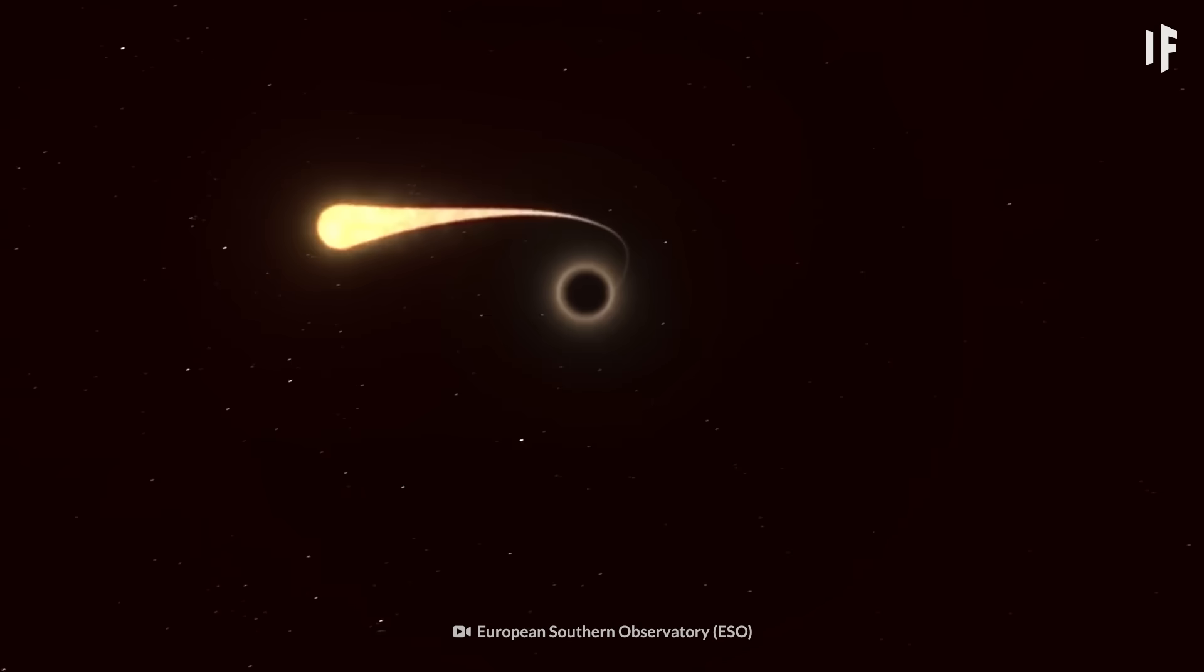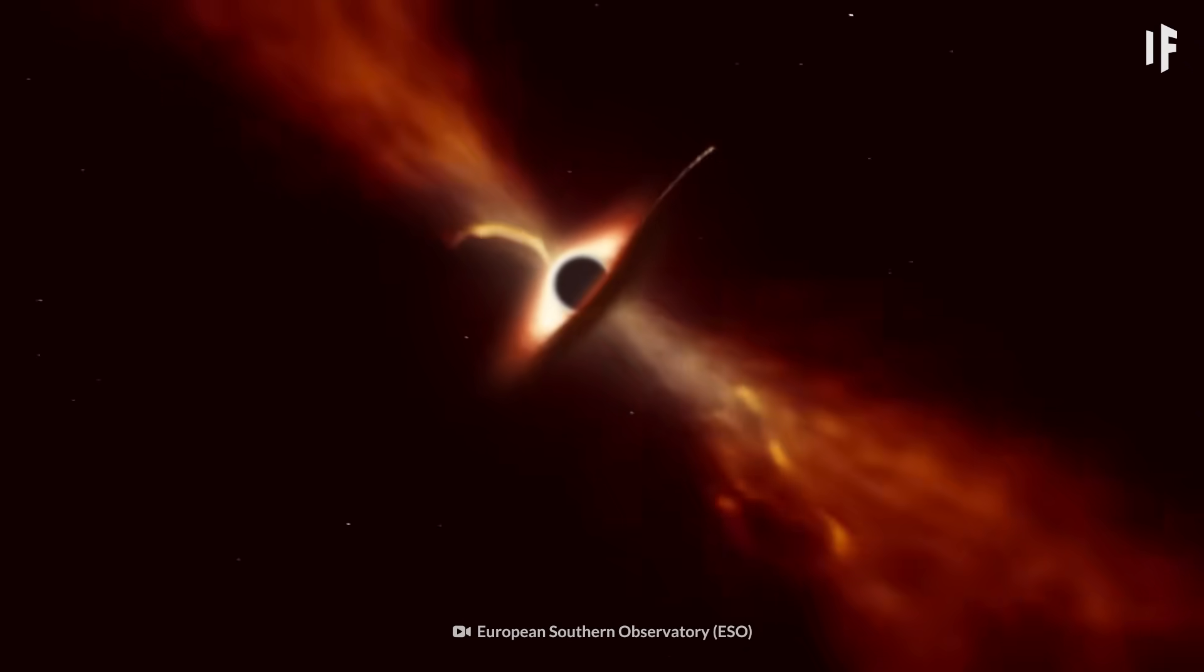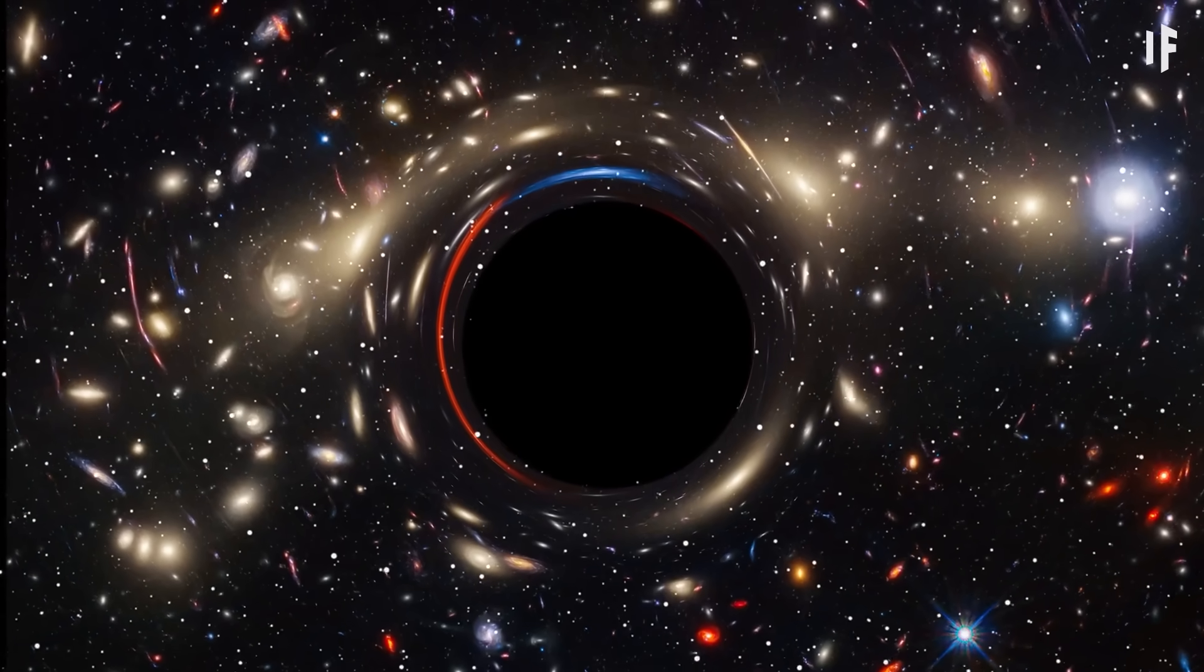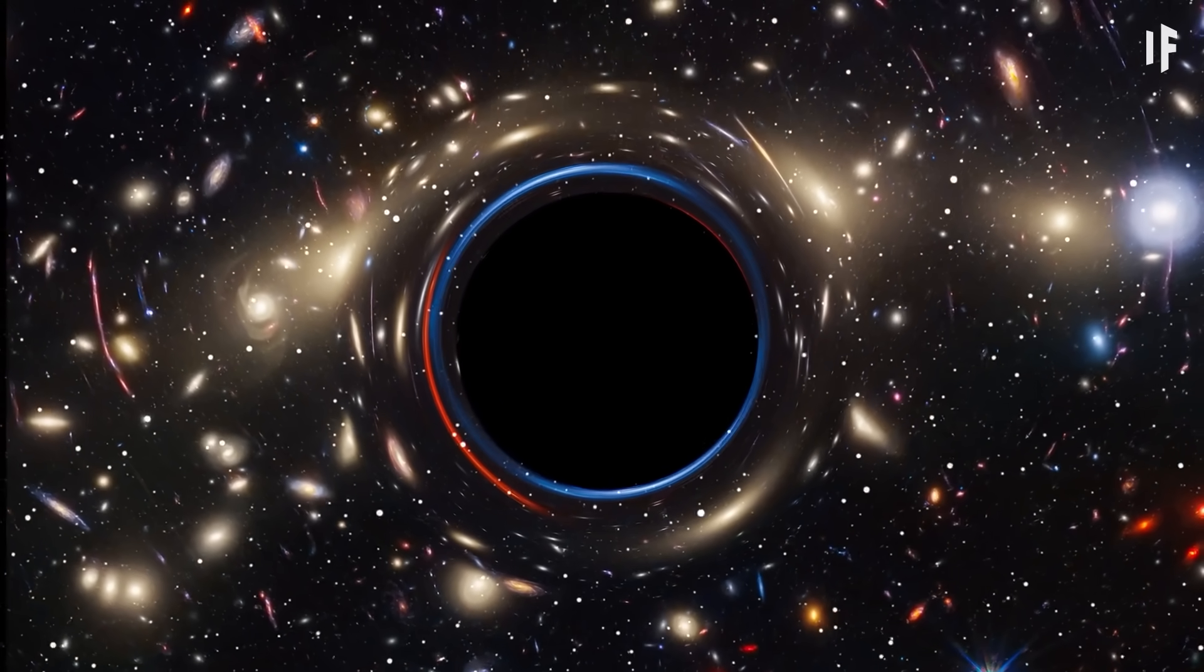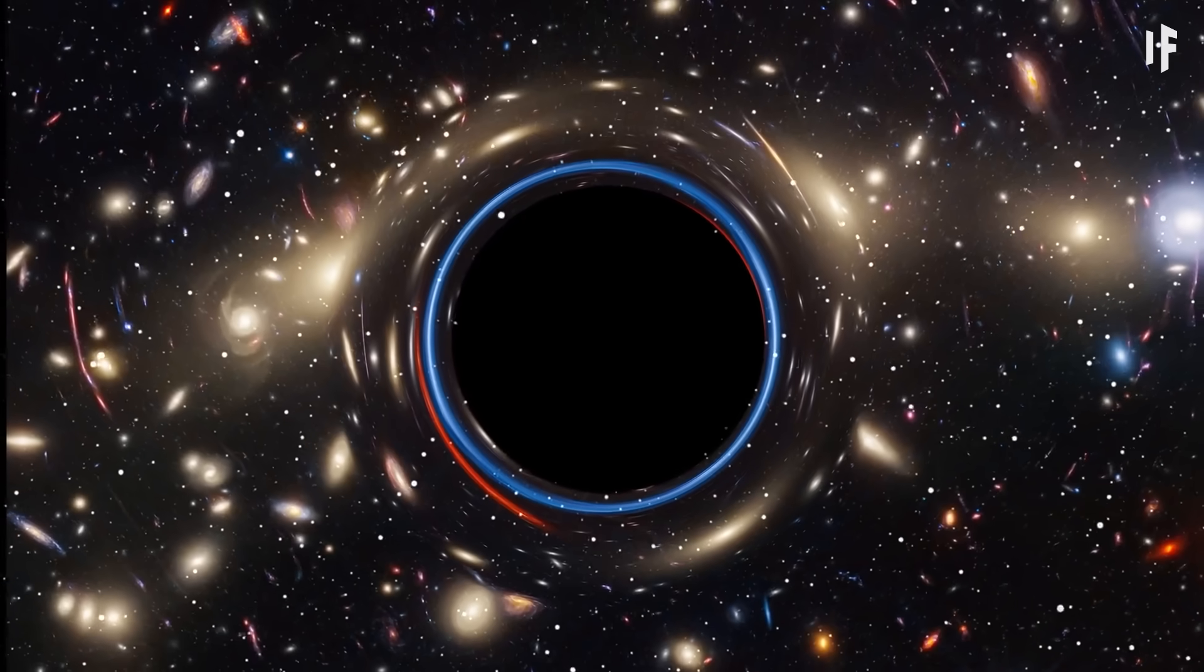Now, a black hole can form in two different ways. One way is when a cloud of gas collapses. These types of black holes can be enormous, 1,000 to 100,000 times the mass of the Sun.